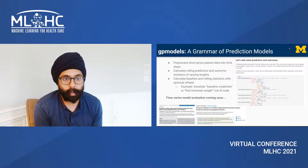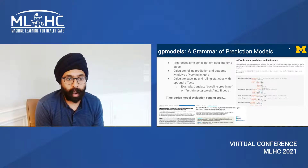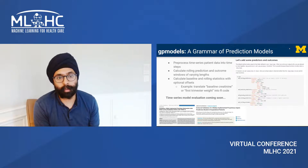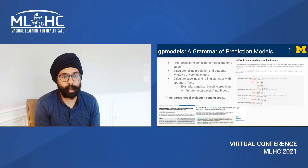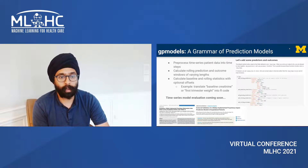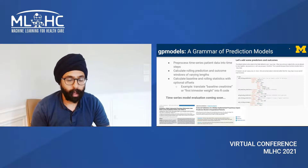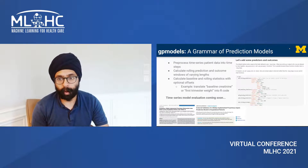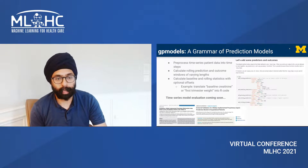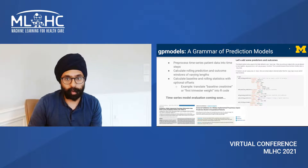GP Models provides a grammar of prediction models. This can be useful for pre-processing time-series patient data into time steps. If you look at the syntax on the right, you'll notice that this syntax can be used to calculate rolling and prediction outcome windows of varying lengths and calculate baseline and rolling statistics with optional offsets. For example, allowing you to translate baseline creatinine or first trimester weight into R code. We also have a model evaluation framework that will be built into this, used in recent publications evaluating proprietary prediction models, and that will be coming to GP Models relatively soon.